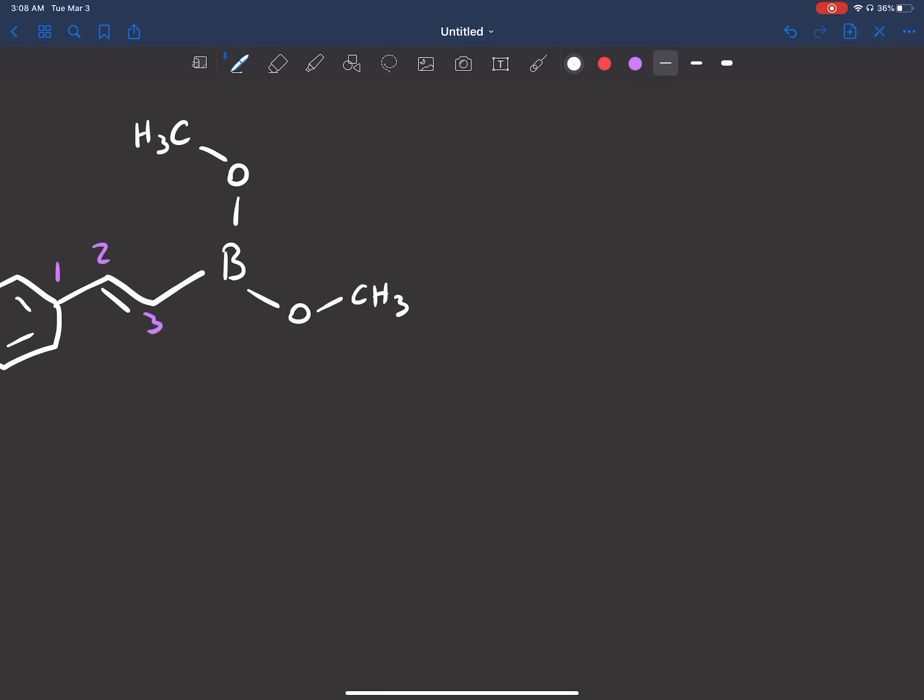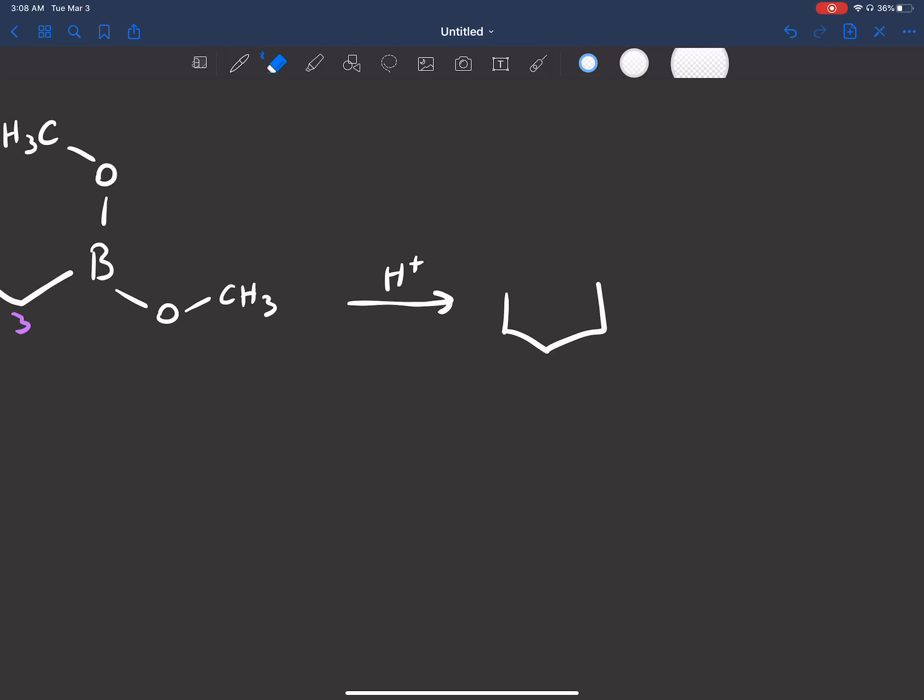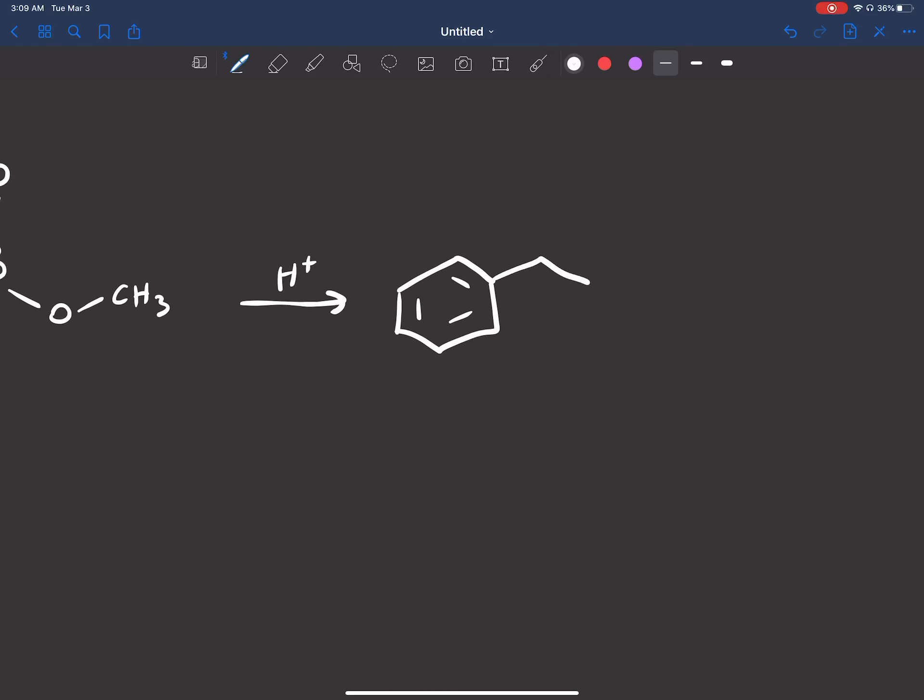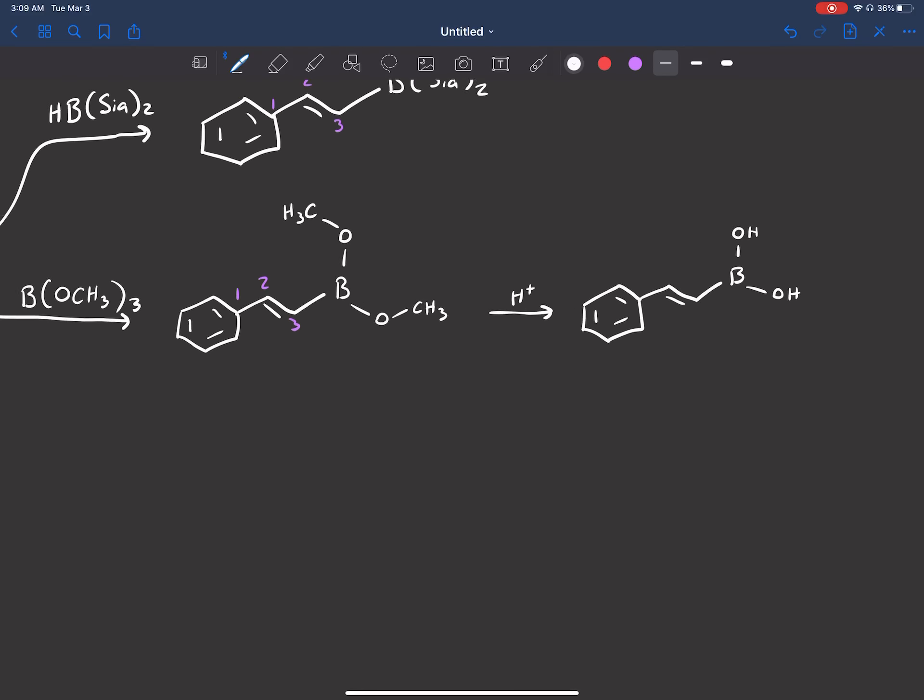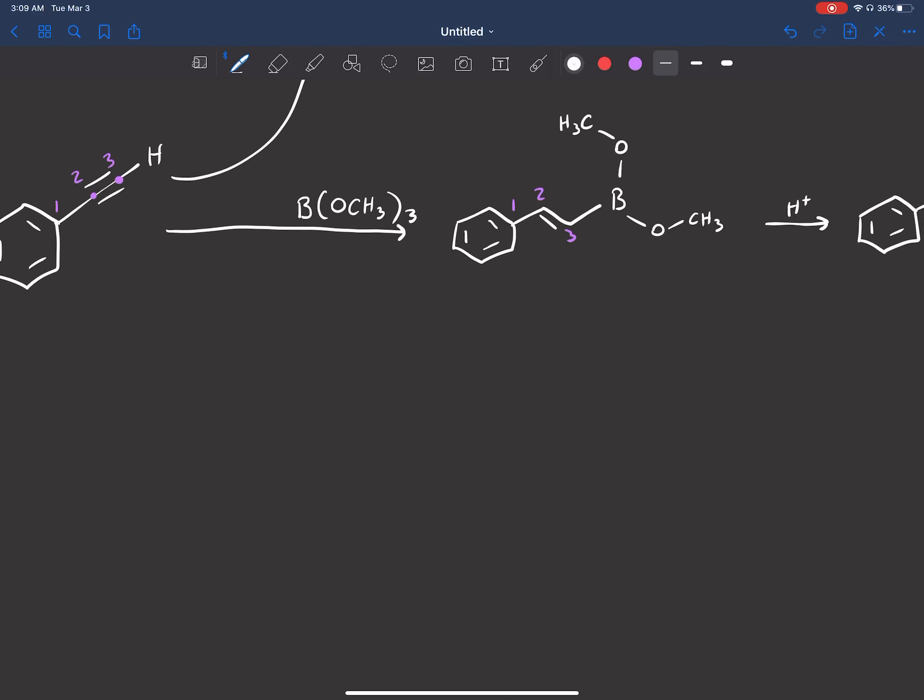And you could have abbreviated it so it looks like this: boron (OCH3)2. That would have worked as well. You don't have to draw the full structures. And the next step after this is we would just add H+ and turn this compound into boron (OH)2, and we have our boronic acid.